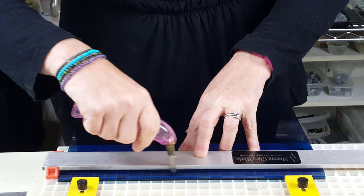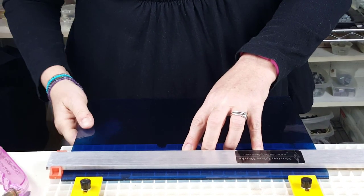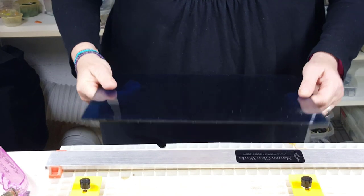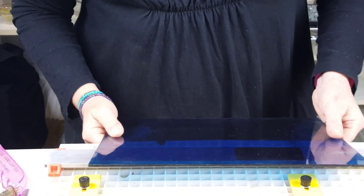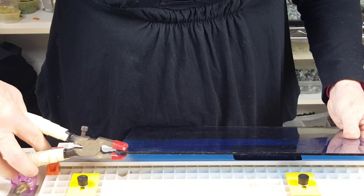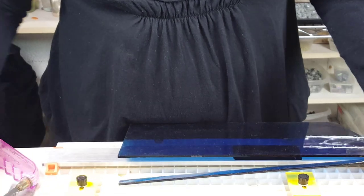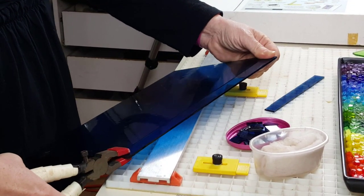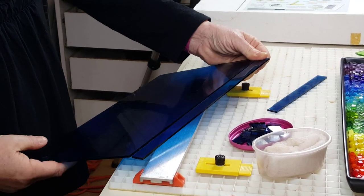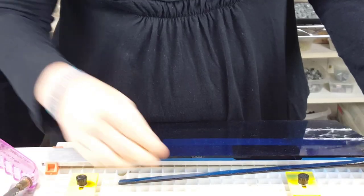You're going to listen for that noise, and that noise is going to mean that you cut it the right way. After you do that, you take your running pliers, and you put it right along the edge, and you just lightly break it.